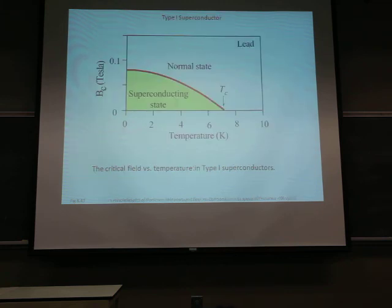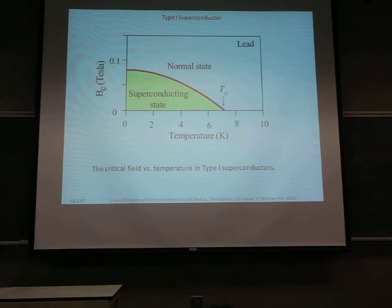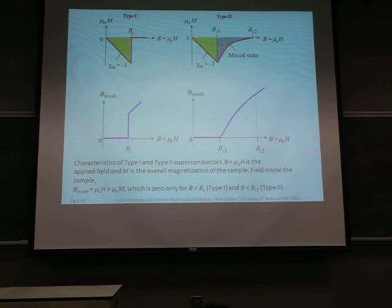So, there will be critical temperature and critical field to describe the superconducting states. The superconducting states only maintain at the temperature below critical temperature and at the field below critical field. And based on the different critical field, there will be type 1 and type 2 superconductors. For type 1 superconductor, there is only one critical field, BC1. And for type 2 superconductor, there will be two critical fields. That's the difference between type 1 and type 2 superconductors.